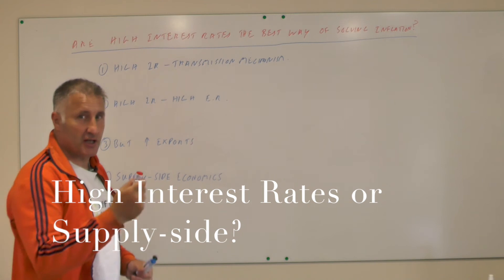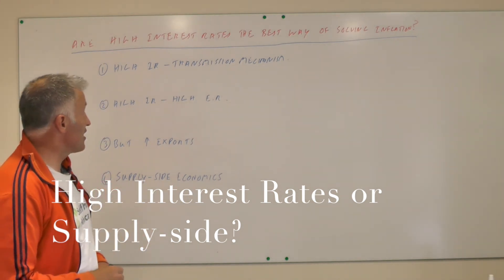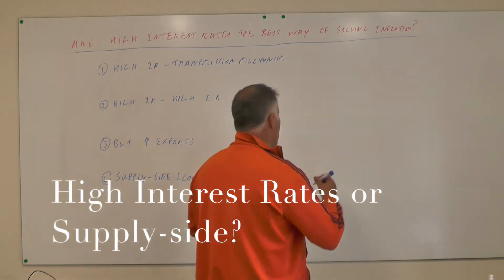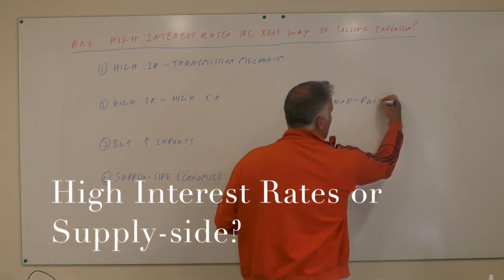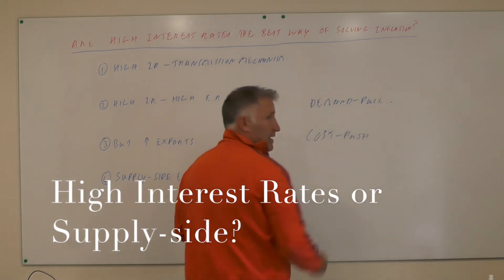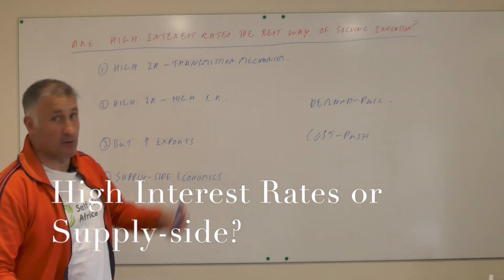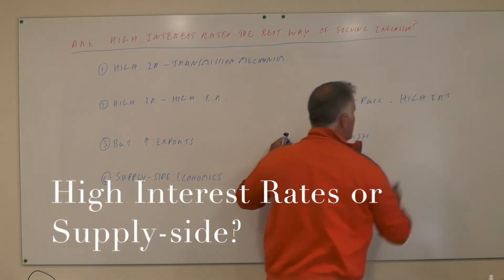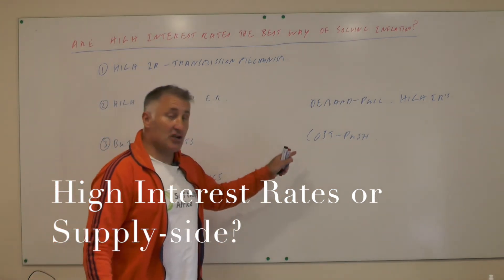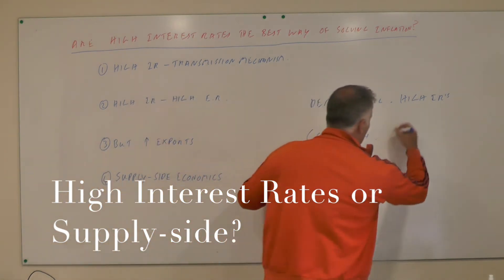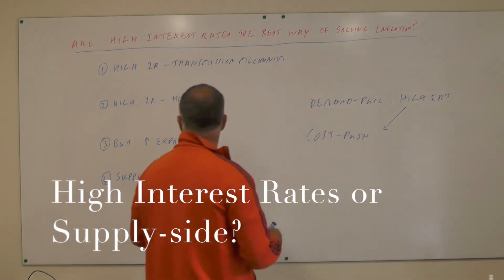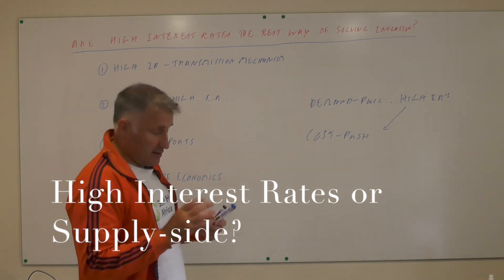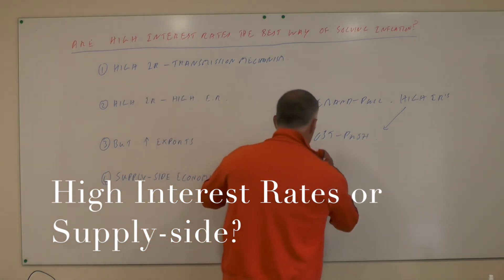Still on lesson 55 and monetary policy: are high interest rates the best way of solving inflation? First you have to think about what sort of inflation we have — demand pull or cost push. With demand pull inflation, probably the best short-run way is through high interest rates. But people often forget that high interest rates will also bring down cost push inflation via the high exchange rate. Ultimately you may also want to use supply side economics.